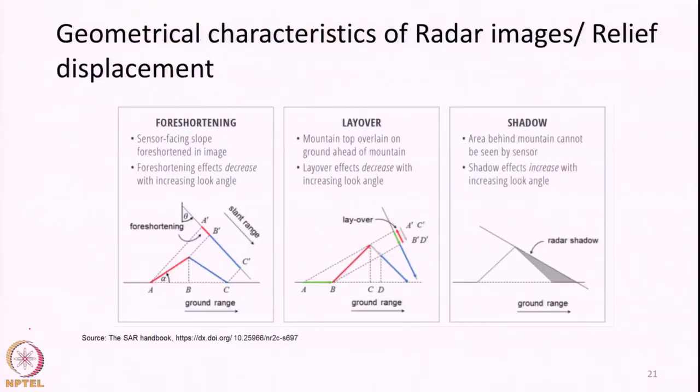The presence of such topographic features — say, there may be a small hill — will change how land surface features appear in the radar images. In this slide I have marked three concepts or three ways in which features will appear distorted in radar images: foreshortening, layover, and shadow.